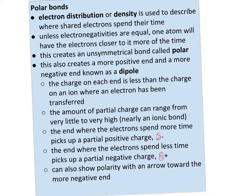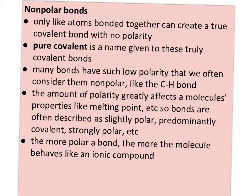We can also show polarity with an arrow toward the more negative end. For example, with water — HOH — the more negative end is the oxygen, so we show that the electrons hang out there more of the time. Only like atoms bonded together can create a true covalent bond with no polarity. These are called pure covalent bonds, true covalent bonds, or nonpolar bonds.